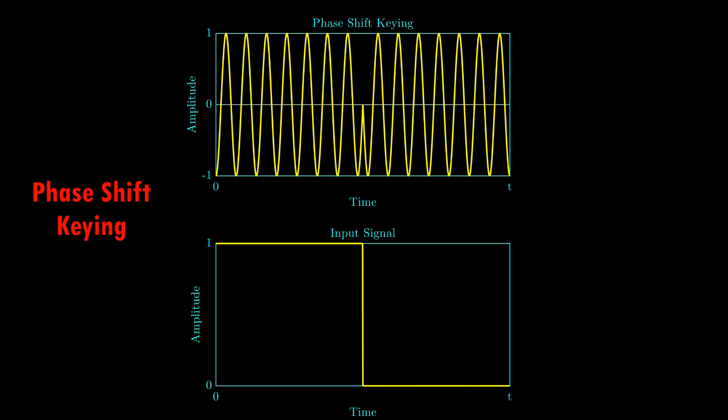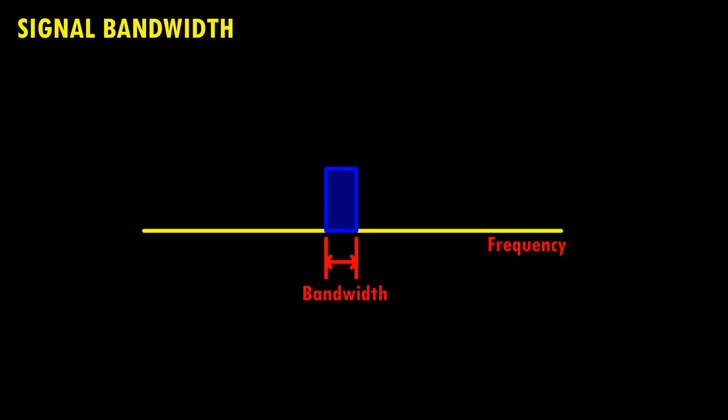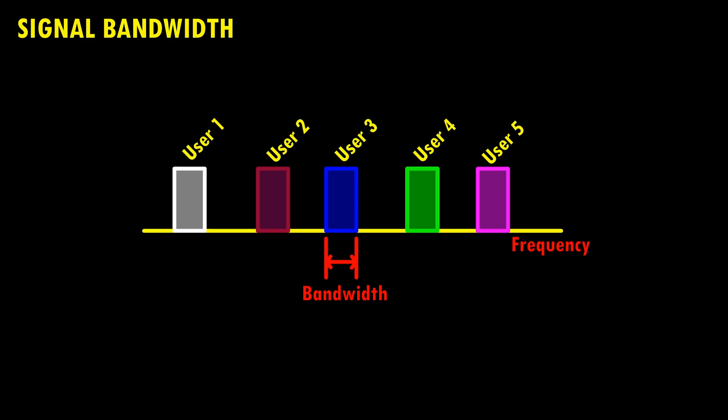The first concept of wireless communication is related to signal bandwidth. Every transmitted signal must occupy a specific frequency range or bandwidth. This is essential to avoid interference, as multiple users transmit signals simultaneously. Allocating specific frequency bands ensures that the signals do not overlap and interfere with one another. For instance, for the GSM 900 standard, the downlink bands from base station to mobile phone range from 935 to 960 MHz, with each user allowed a maximum bandwidth of 200 kHz.